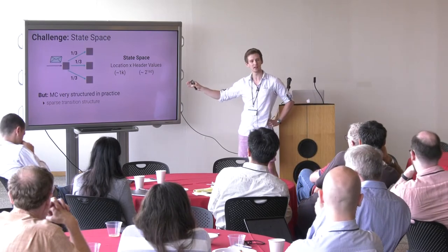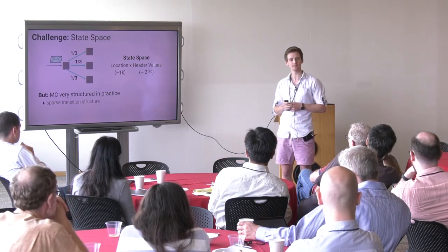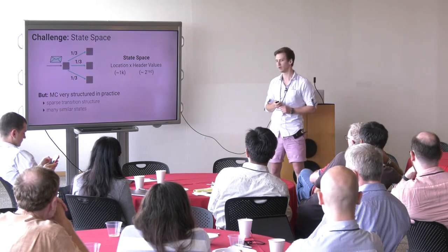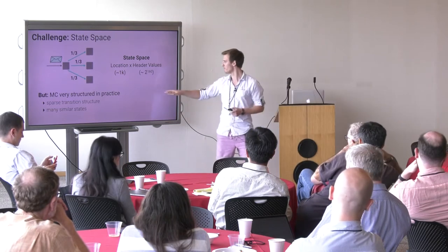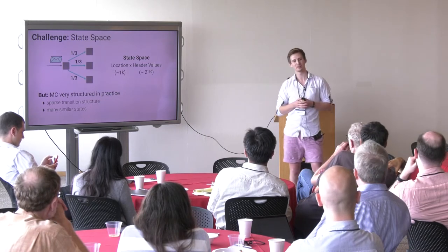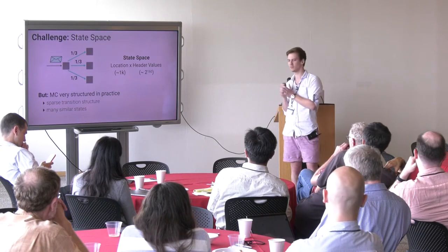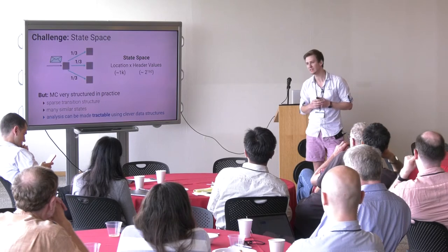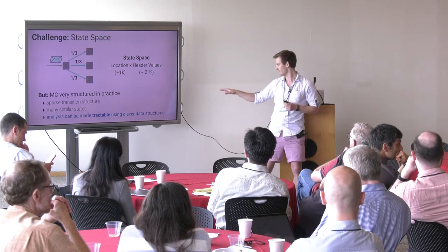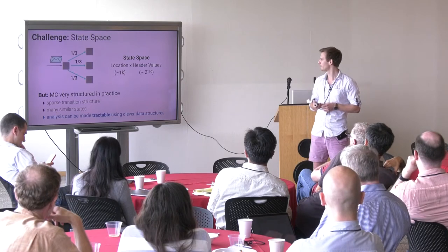The key observation is that this is a very structured Markov chain with lots of structure we can exploit. One key property is that it's very sparse — packets don't get rewritten by the network in arbitrary ways; there are just a few ways a header might be rewritten, and packets get forwarded only to neighboring nodes. The other key property is that most states of this Markov chain are very similar, because networks don't look at the entire header of a packet to decide where to send it, but only at a few select bits. So many packets are treated in exactly the same way.